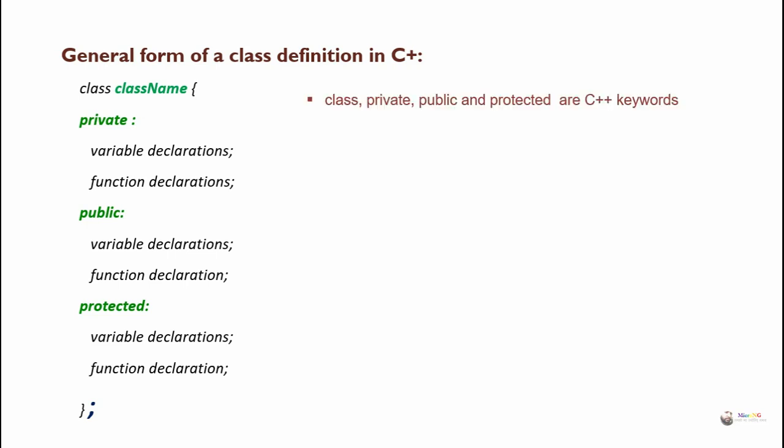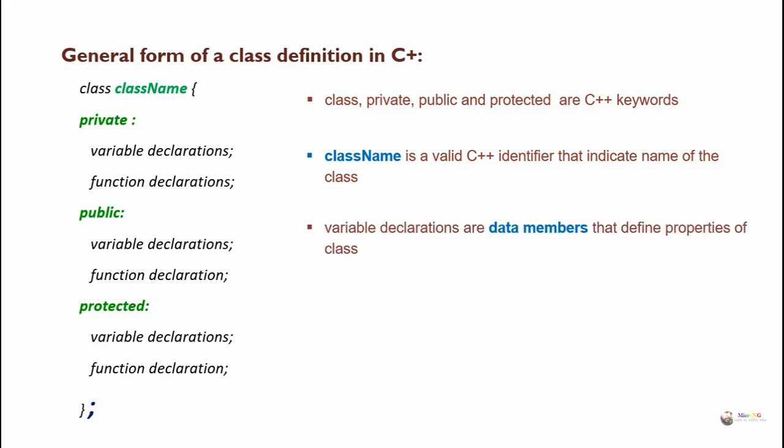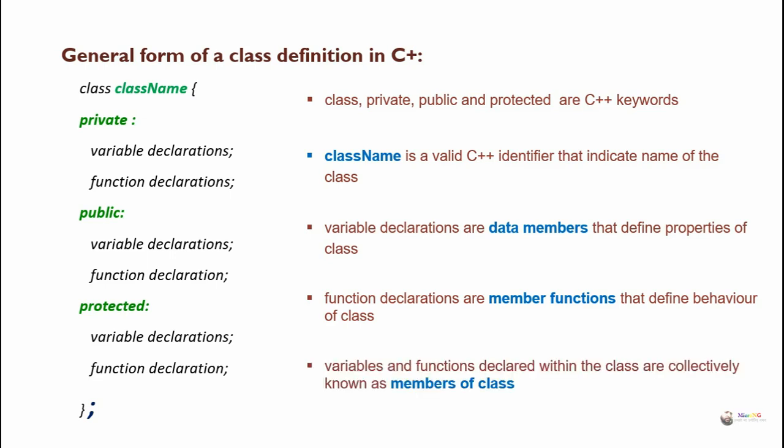The keywords 'class', 'private', 'public', and 'protected' are keywords in C++. The class name is a valid C++ identifier that indicates the name of the class. Variable declarations are data members that define the properties of a class. Function declarations are member functions that define the behavior of the class. Variables and functions declared within the class are collectively known as members of the class.